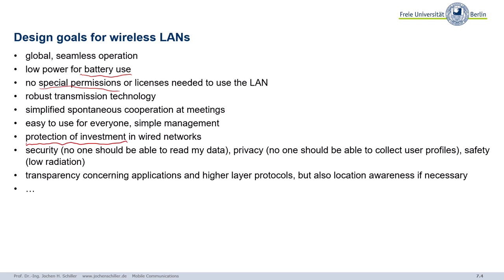Protection of investment is quite important — if you have a fixed infrastructure, adding a wireless infrastructure should not require changing anything in the fixed infrastructure. The system should be secure because everyone can listen to the wireless medium. Privacy is needed so no one collects user profiles. Low radiation is important because antennas may be close to your body. And there should be transparency for higher layer protocols — applications should not be aware of the fact that there is a wireless LAN underneath, so no new applications are needed.